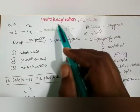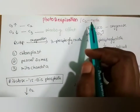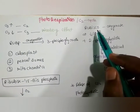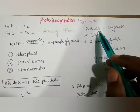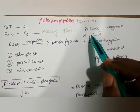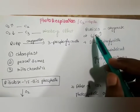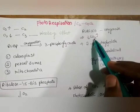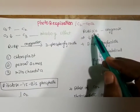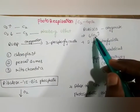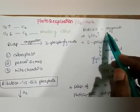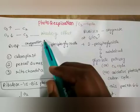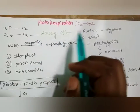Hello friends, our next topic is photorespiration. Photorespiration is also called the C2 cycle. Rubisco is the enzyme which plays the main key role in both the C3 and C2 cycles. In the C2 cycle, in the presence of low CO2 concentration, rubisco acts as an oxygenase. In the presence of more CO2 concentration, rubisco acts as a carboxylase. So rubisco has two activities: oxygenation and carboxylation.